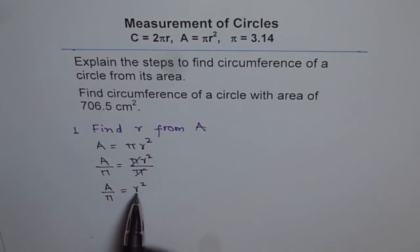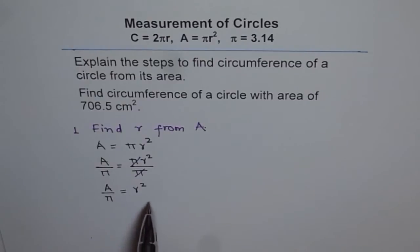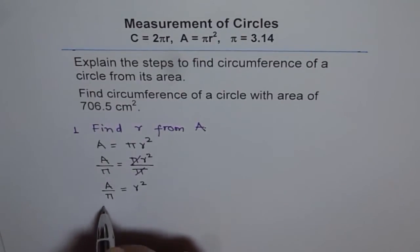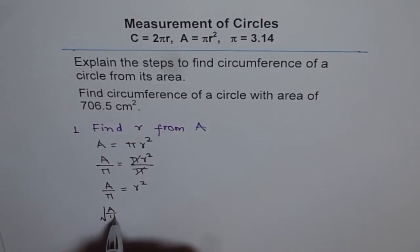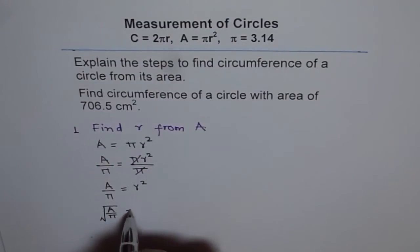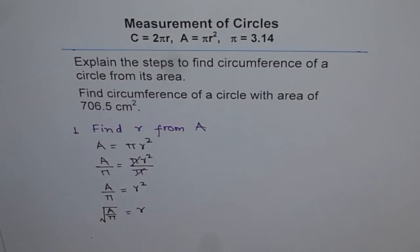But we need r, not r squared. To get r, we need to square root it. So we take the square root of A divided by π, and once you do that, you get the value of r.